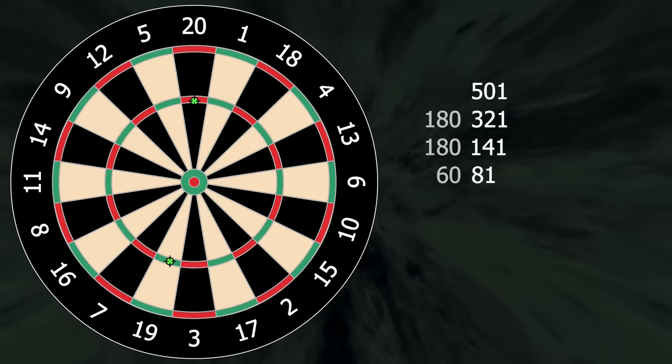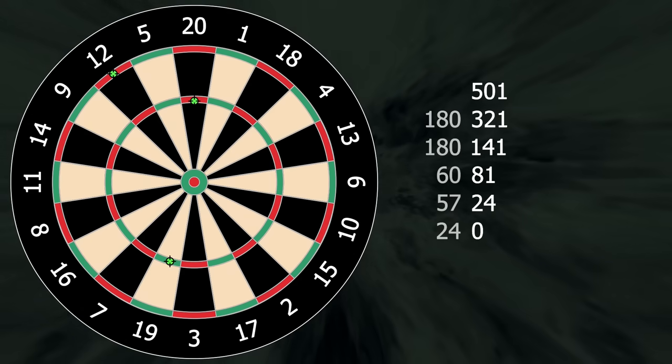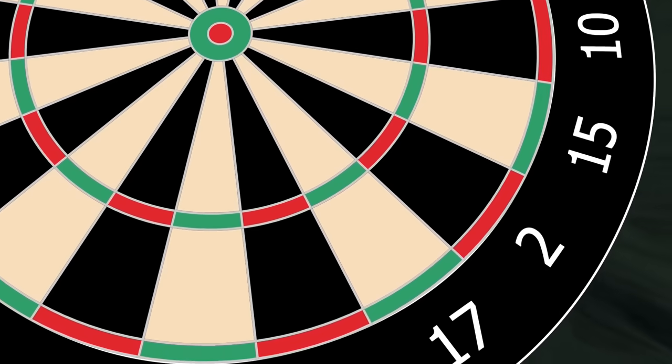Which is usually finished by going treble 20, treble 19, double 12. You can also go treble 17, treble 18, double 18 on the final visit as John Lowe did.